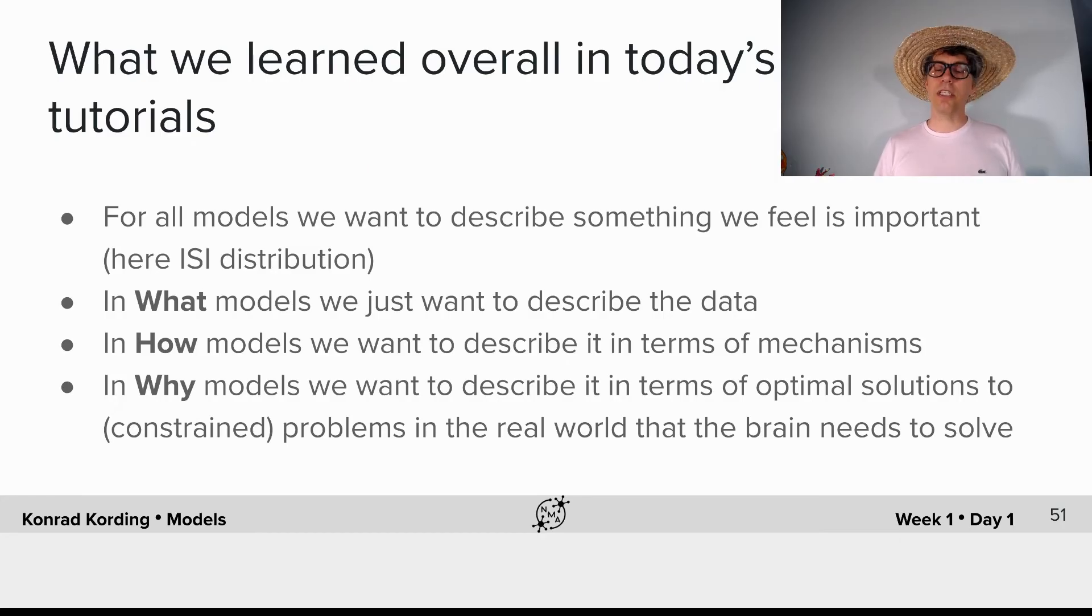In What models, we just want to describe the data with an equation. In How models, we want to describe it in terms of a mechanism. We want to figure out how the brain actually does something. In Why models, we want to describe it in terms of an optimal solution to a constrained problem in the real world that the brain actually needs to solve.